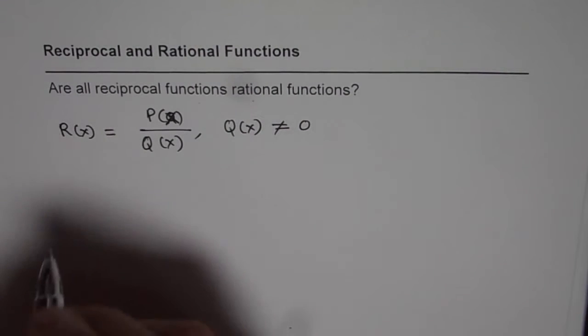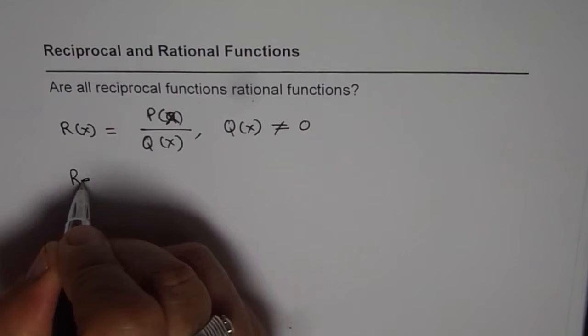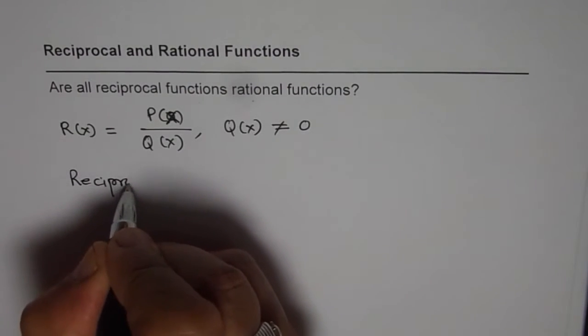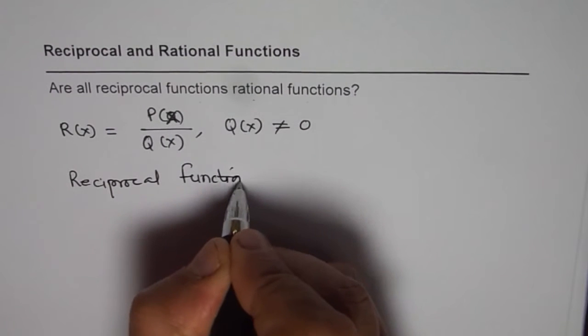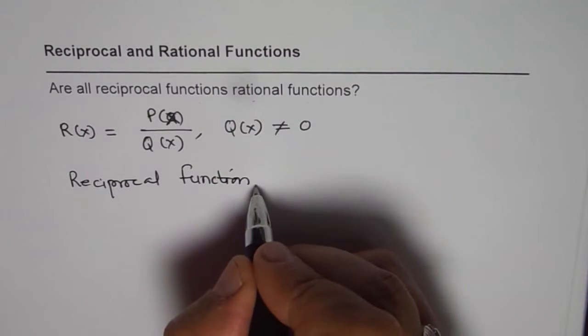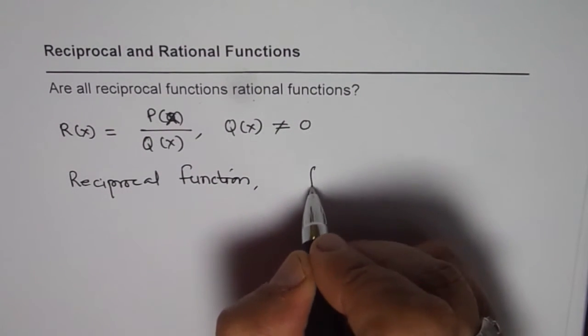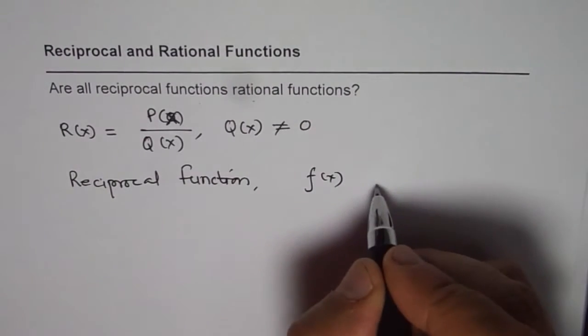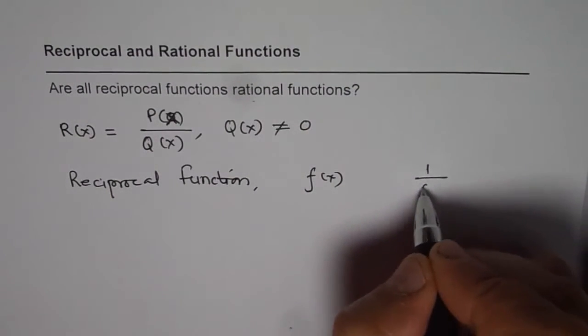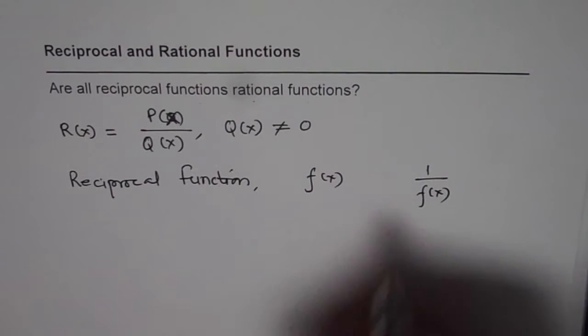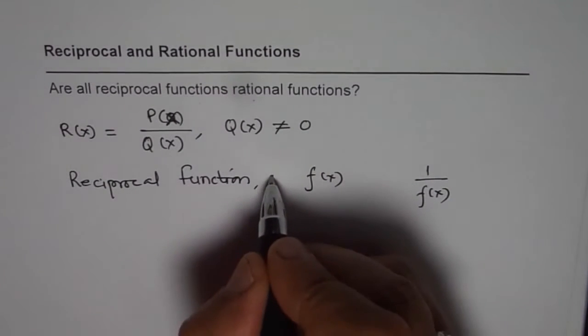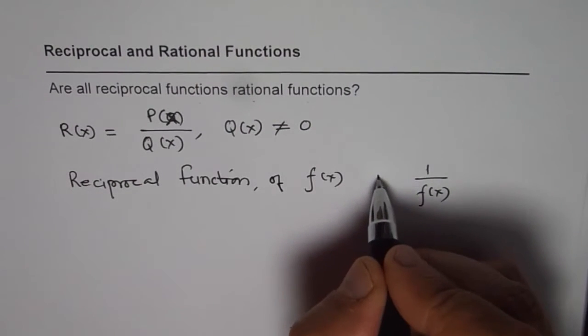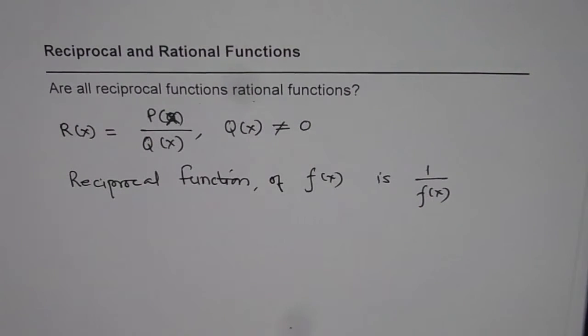Now what is a reciprocal function? Reciprocal function is, let us say if we have a function F of X, then the reciprocal will be 1 over F of X. So reciprocal function of F of X is 1 over F of X. So that is what the reciprocal function is.